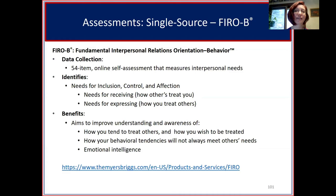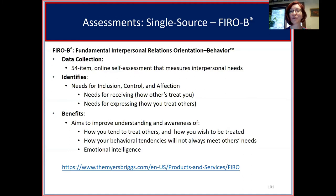The FIRO-B is a 54-item online assessment that measures interpersonal needs. It identifies needs for inclusion, control, and affection — needs for receiving (how others treat you) and needs for expressing. The aim is to improve understanding and awareness of how you tend to treat others, how you want to be treated, and how your behavioral tendencies may not always meet others' needs. It also touches on emotional intelligence.